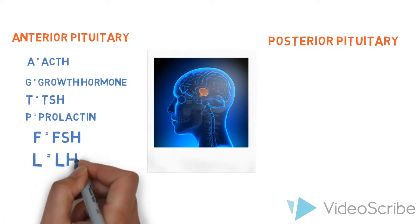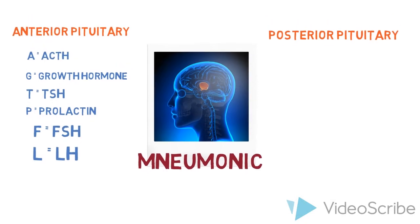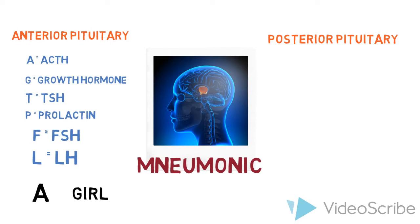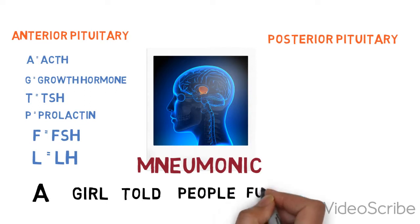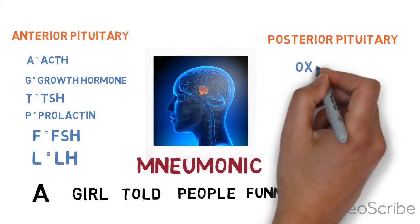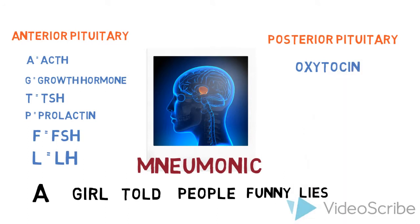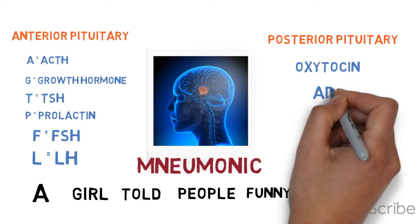I came up with a mnemonic that might help you remember these six hormones: 'A girl told people funny lies.' The A stands for ACTH, the G stands for growth hormone, etc. As for the posterior pituitary gland, it is responsible for oxytocin, which causes the contraction of the uterus during childbirth and stimulates milk production, and ADH, which stimulates the kidney to increase water absorption.